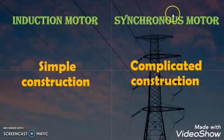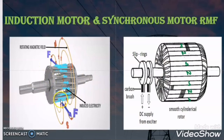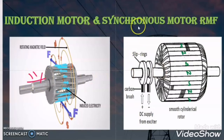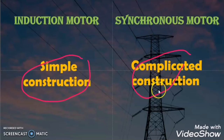The other difference is that the induction motor has simple construction but the synchronous motor has complicated construction. In the induction motor, the rotor is the simplest compared to the synchronous motor — no additional power supply is required, just rotor bars and end rings. But the synchronous motor requires power supply, slip ring and carbon brush arrangement, and windings. So the induction motor has the simplest construction while the synchronous motor has complicated construction.